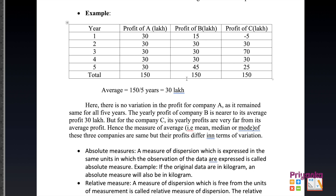This shows the importance of dispersion. We find the average, but here there is a difference in variation. Company A has no dispersion — its profit remains the same for all 5 years. Company B's yearly profit is nearer to its average of 30 lakh, but company C's yearly profits are very far from its average. Hence the mean, median, and mode of these three companies are the same, but their profits differ in terms of variation.